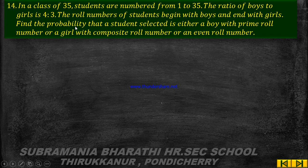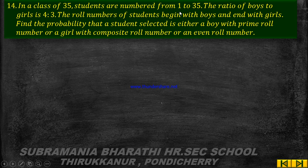First, how many students are in the class? 35 students. The numbers are 1 through 35. Boys and girls ratio is 4 to 3. Roll numbers start with boys first, then girls.